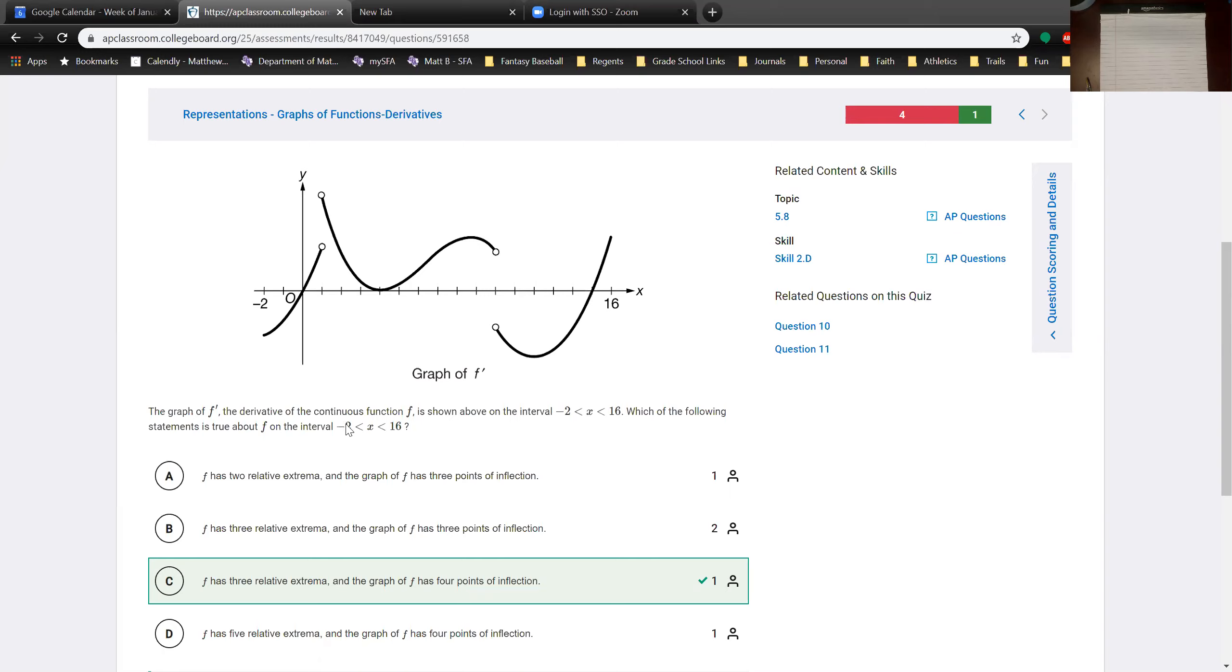So the original function is continuous even though f prime is not continuous. That means there must be some sort of cusp or some sort of sharp corner at this location and this location.